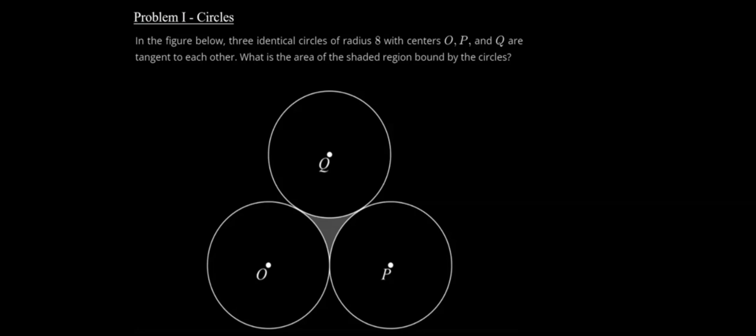The figure below shows three identical circles of radius 8 with centers O, P, and Q that are tangent to each other. What is the area of the shaded region bound by the circles? Take a minute and see if you can solve this by yourself.